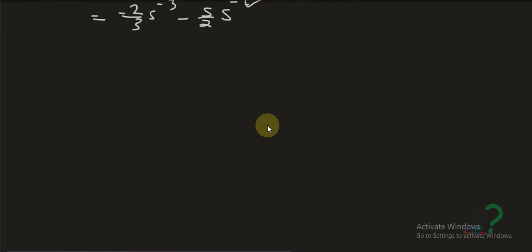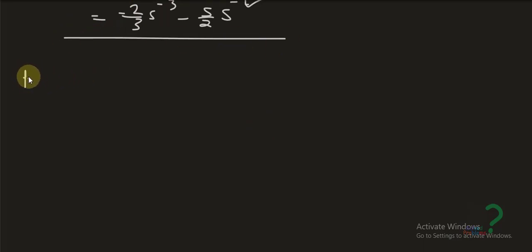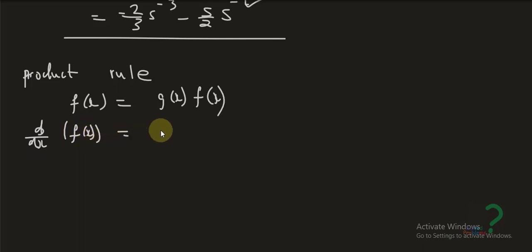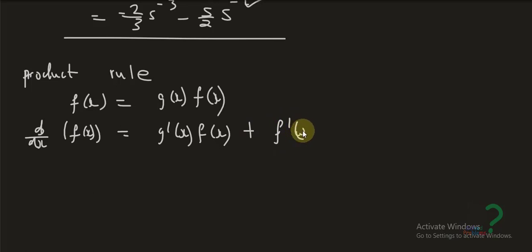Now let's look at examples involving the product rule. The product rule says that if f(x) is a product of two functions, the derivative d/dx of f(x) equals g prime of x times the second function, plus the first function times g prime — that is, derive the first function and multiply by the second, then add the first multiplied by the derivative of the second.